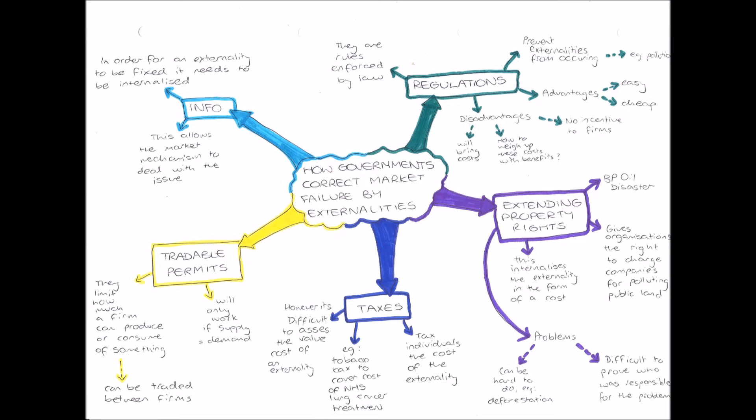Next, we have extending property rights. This is when organizations are created which have the right to charge companies for polluting public land. The problem with public land is that nobody really owns it, so the idea is that an organization is set up to have authority over that land. An example is the Environment Agency, which controls all public natural environmental land in the country and can charge any company that pollutes it — internalizing the externality in the form of a cost.